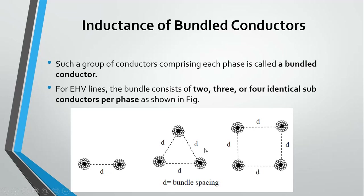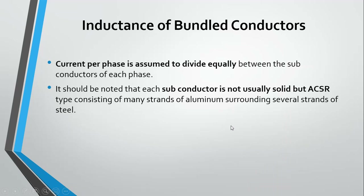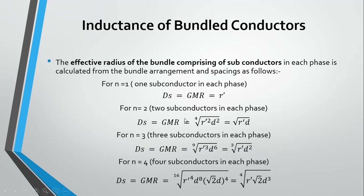In the bundle-of-conductors arrangement, we normally use two, three, or four conductors, and the distance between each conductor is kept constant. Special spacers are used to maintain this distance, as seen in the first lecture on power transmission lines. The benefits of bundled conductors include: reduction of the skin effect, reduction of the corona effect, and equal distribution of current across each conductor.